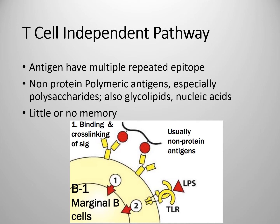The second pathway is called the T cell dependent pathway, which is dependent upon T cells for activation and proliferation of B cells — that's why it's called the thymus dependent antigenic pathway. The T cell independent pathway involves antigens that have multiple repeated epitopes, which results in clustering. These antigens are generally non-protein in nature — generally polysaccharides, glycolipids, and nucleic acids. However, this pathway results in little or no memory cells.